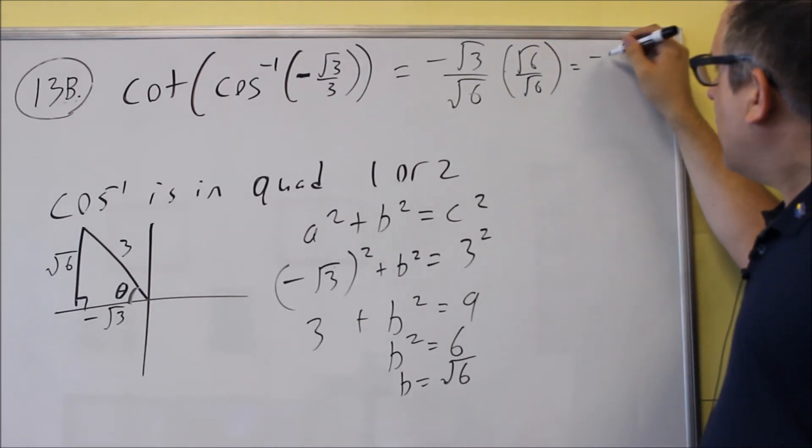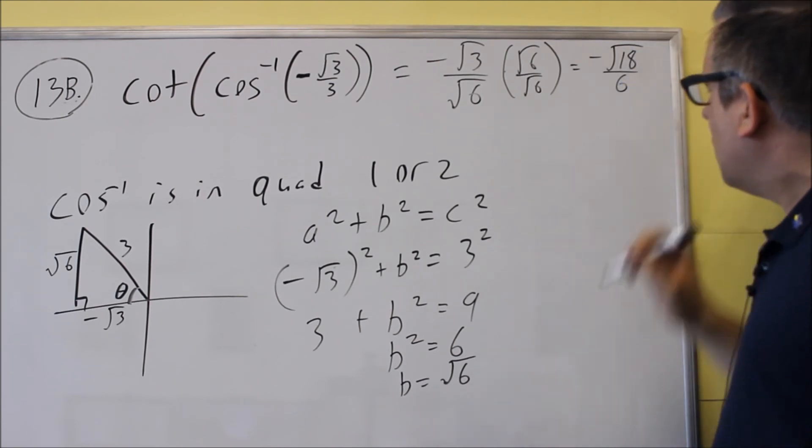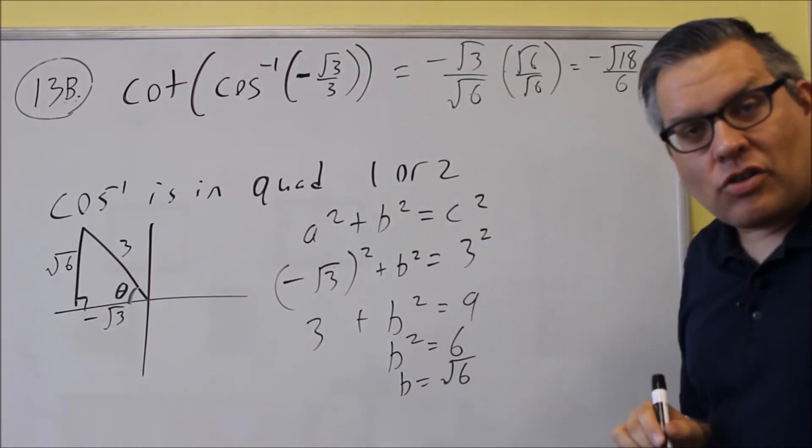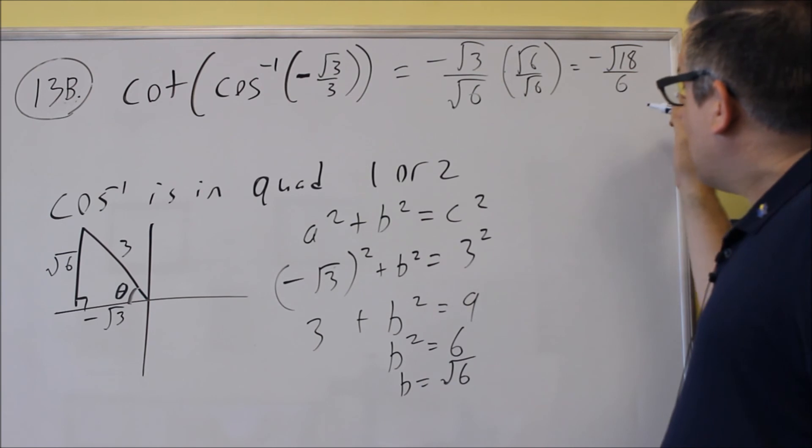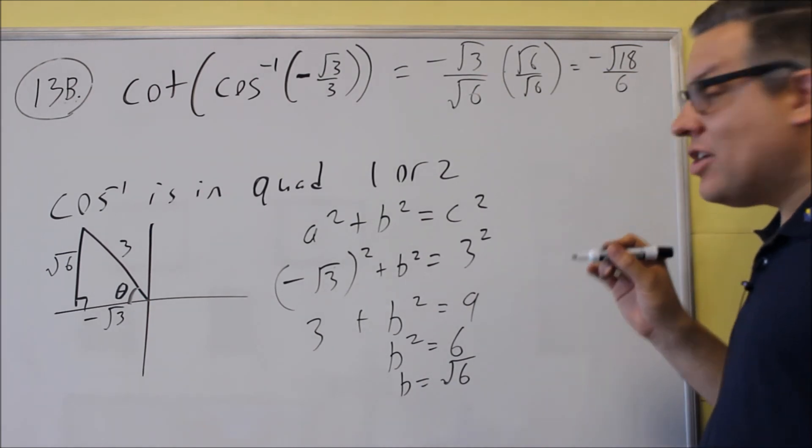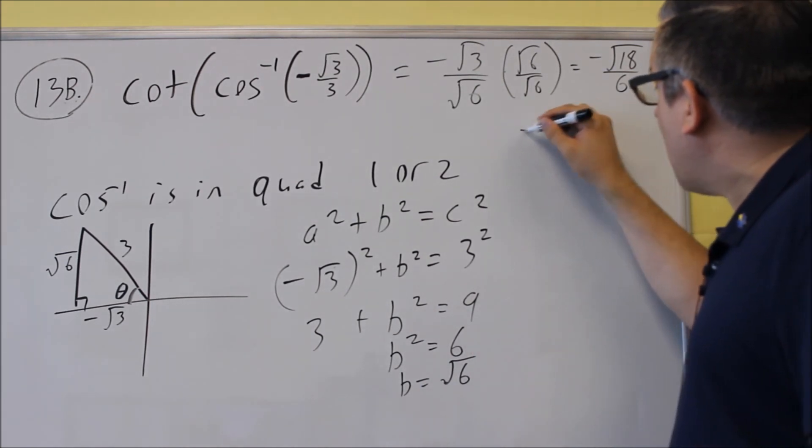We'll get negative square root of 18 over 6. You can leave your answer like that if you'd like to simplify it. You can. Square root of 18, you can write it as 9 times 2, which means a 3 would come out.